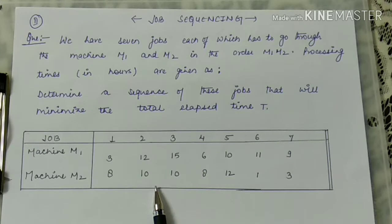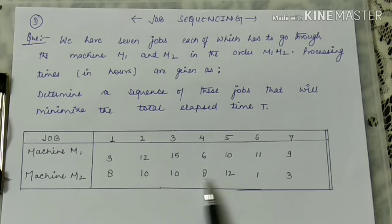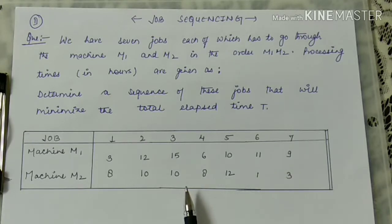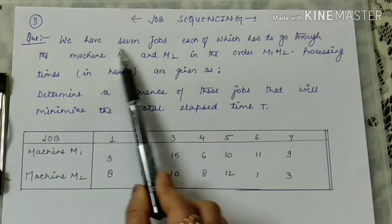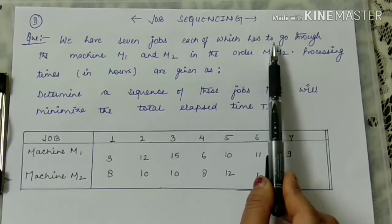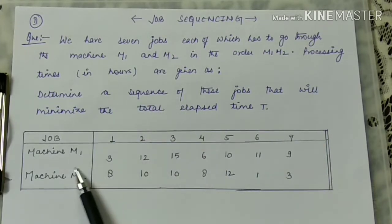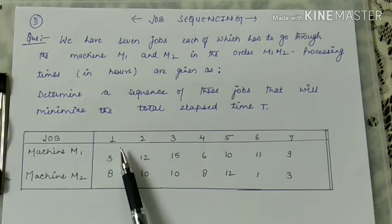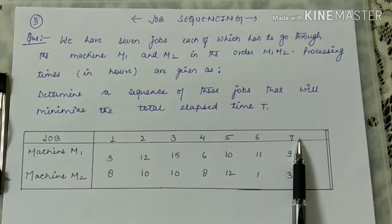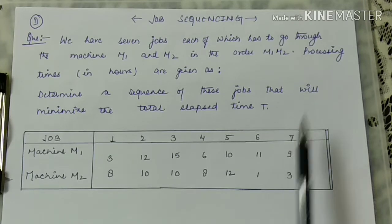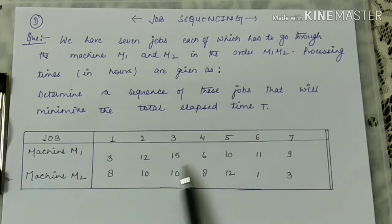The main aim is to discuss the question. In this question, time will occur between the jobs. If time occurs with respect to a single job and a machine, then how we can write them. Starting with the question: we have 7 jobs, each of which has to go through machines M1 and M2. You have 7 jobs and processing times are given in hours.